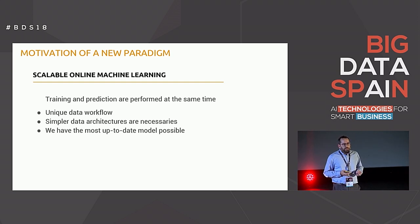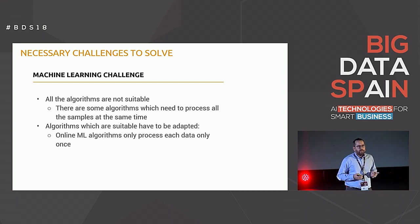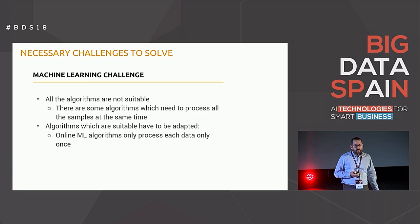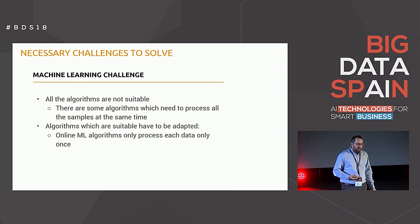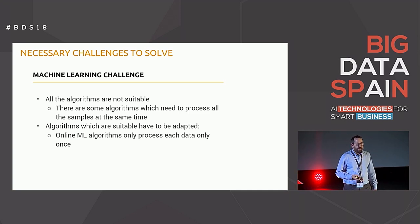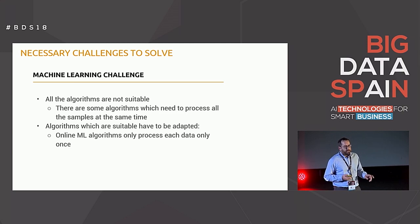It seems to be a good idea, but it is very difficult to implement because we have two important challenges. First, a machine learning algorithm challenge: not all algorithms are suitable because some need to process all samples of the dataset at the same time. We need algorithms that can be adapted to process each data sample only once. The other challenge is technical. Distributing the model across a Flink cluster means each task manager needs access to and the ability to update the machine learning model.